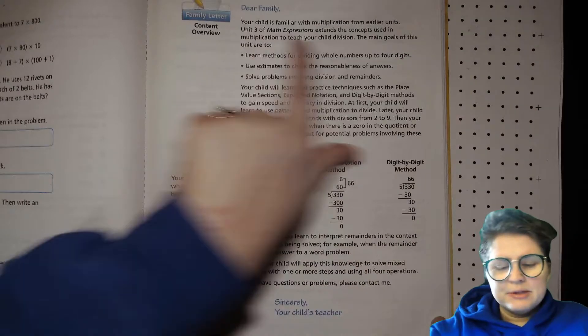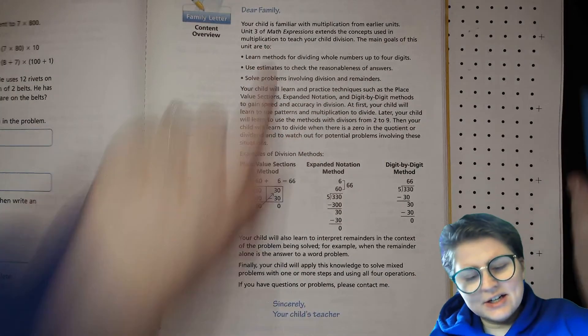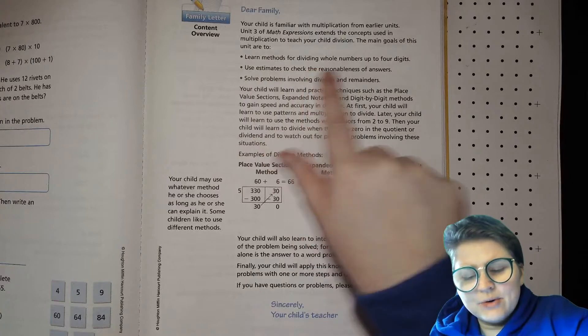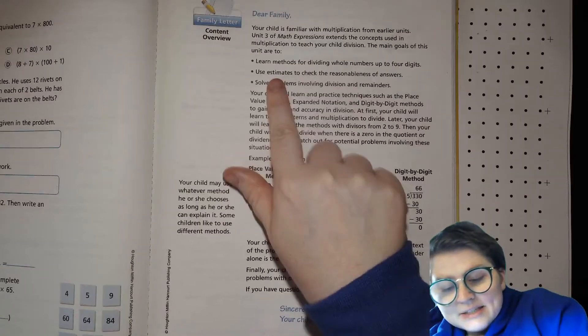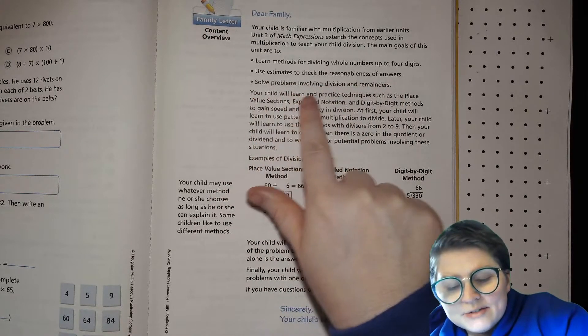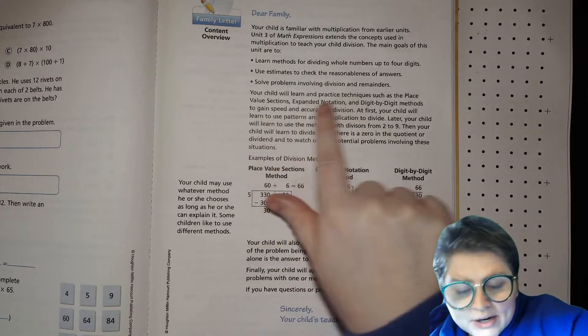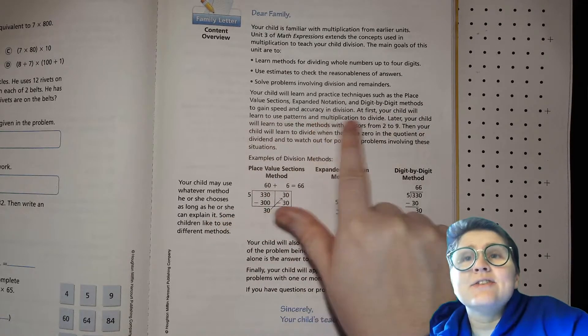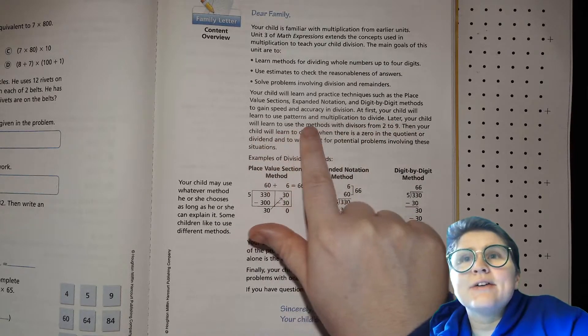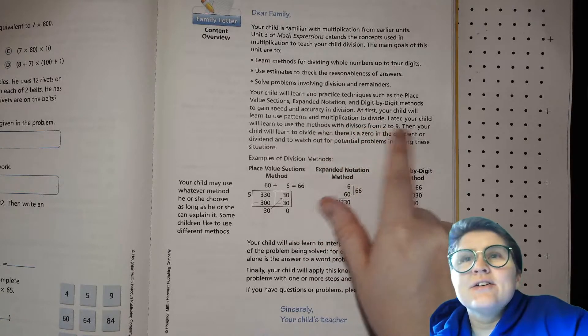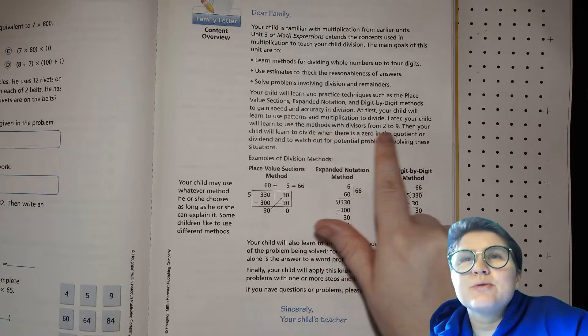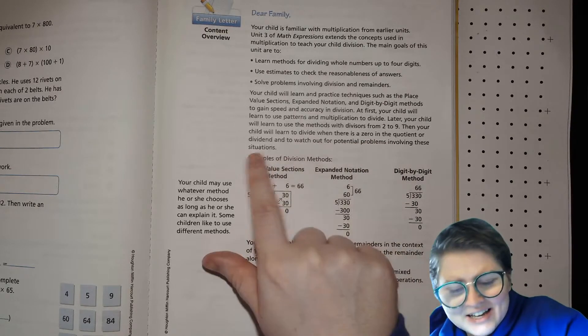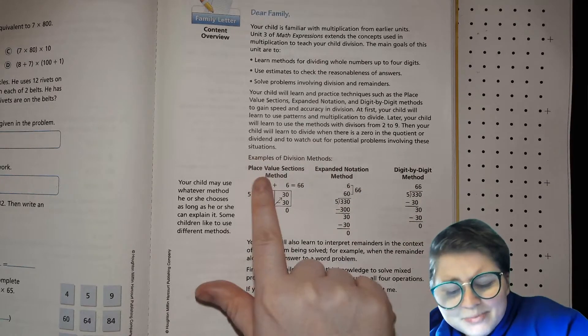All right, dear family, your child is familiar with multiplication from earlier units. Unit three of math expressions extends the concepts used in multiplication to teach your child division. The main goals of this unit are to learn methods for dividing whole numbers up to four digits, use estimates to check the reasonableness of answers, and solve problems involving division and remainders.